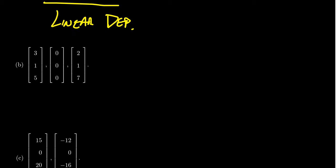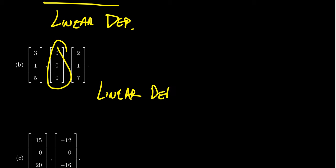The second example has vectors (3,1,5), (0,0,0), and (2,1,7). It contains the zero vector, so this is again a linearly dependent set. Any set of vectors that contains the zero vector is automatically linearly dependent.